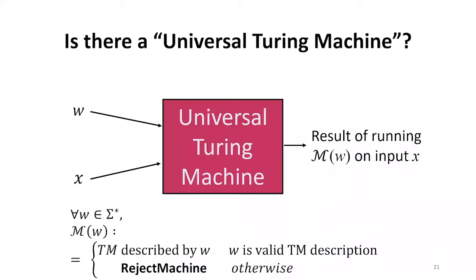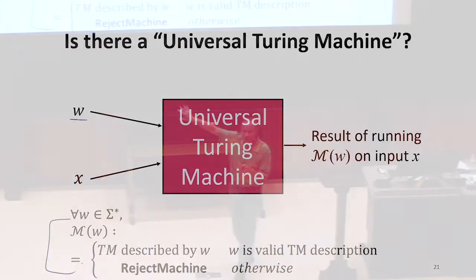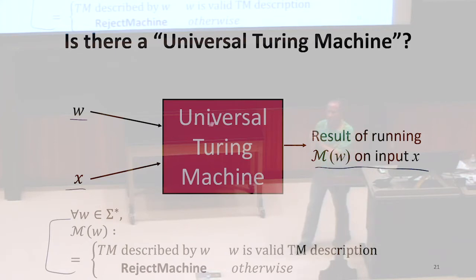What a universal Turing machine should do is take as input a description of a machine, and we already invented this function that says either that description is a valid machine, and that's the machine it describes, or it's invalid and we use the reject machine. And it takes an input and it outputs the result of running the machine that that input describes, that the W input describes on X for any possible machine.